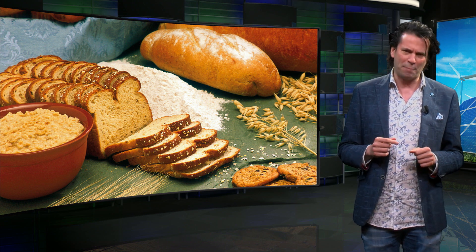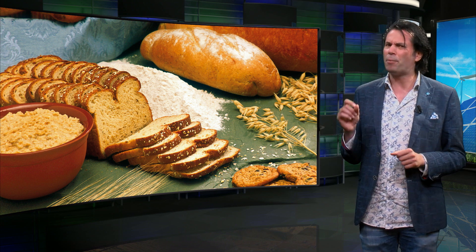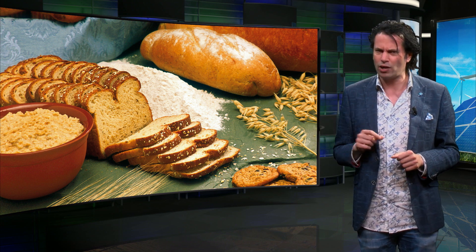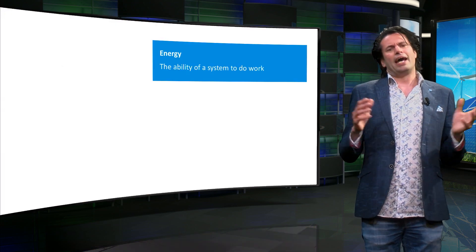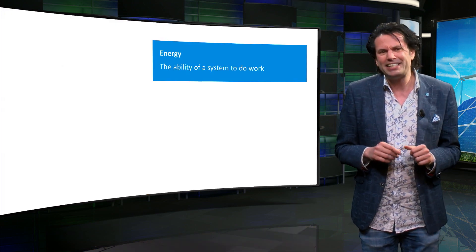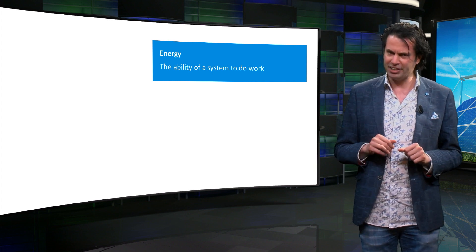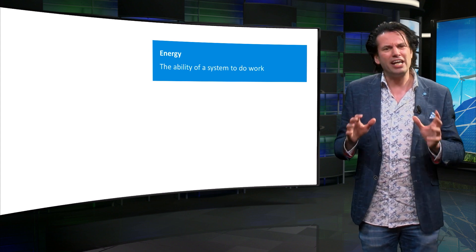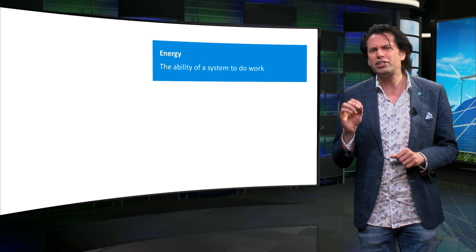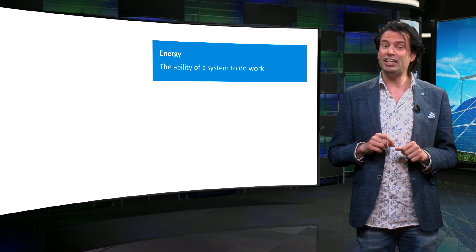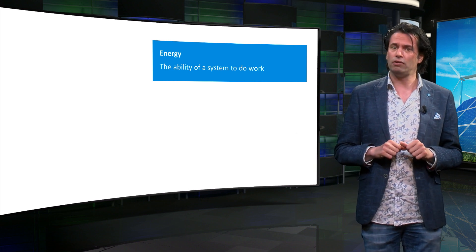To understand and compare the different forms of energy that we see around us, it is important to be able to define and quantify energy. Energy is often described as the ability of a system to do work. This definition, however, is related to the mechanical form of energy. The unit of energy is the joule, which is also related to mechanical energy.